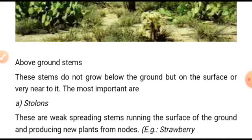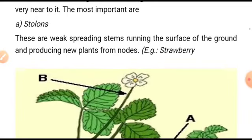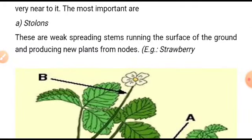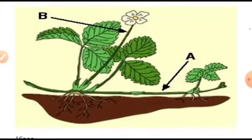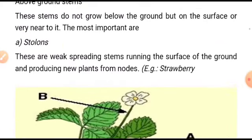Above-ground stems: these stems do not grow below the ground; they are found on the upper ground surface or very near to it. The most important are stolons. Stolons are weak spreading stems running along the surface of the ground and producing new plants — for instance, strawberry.